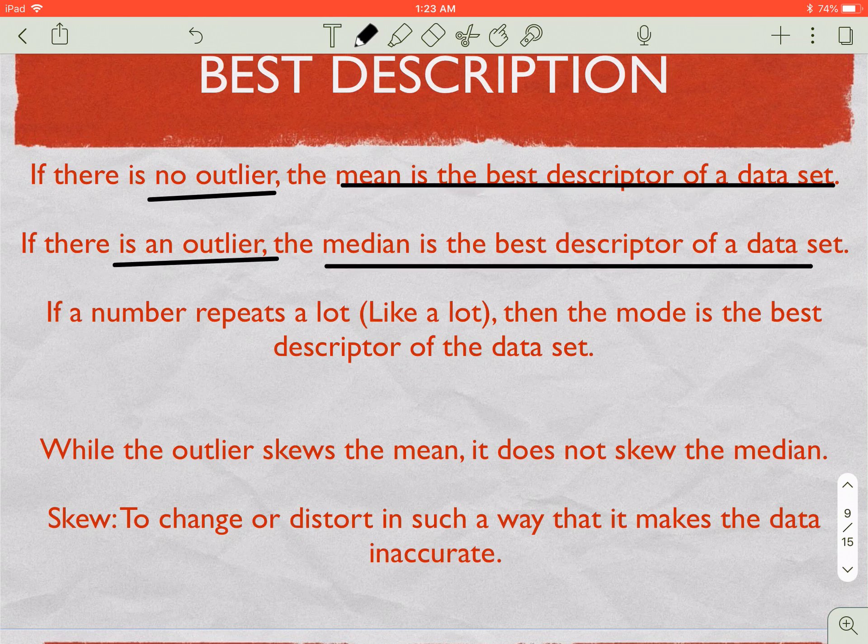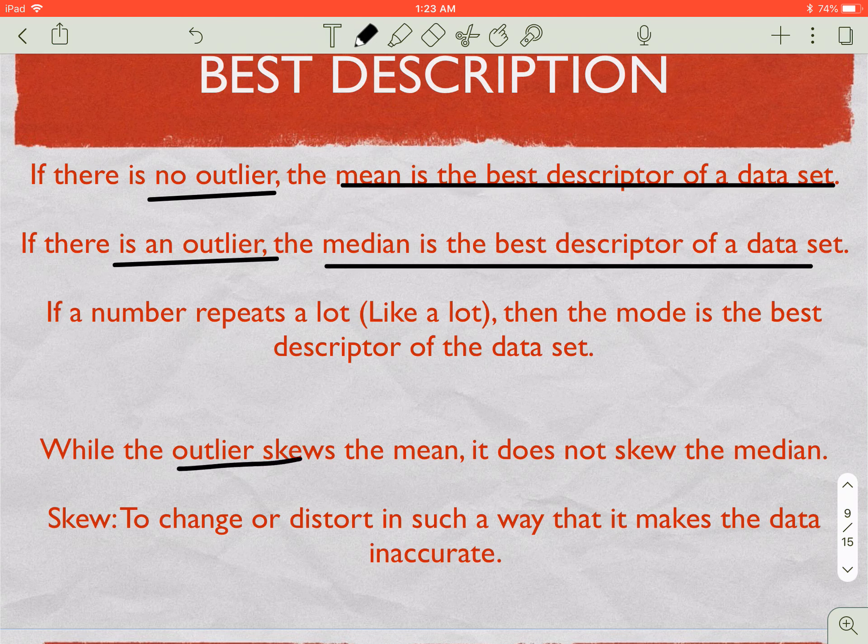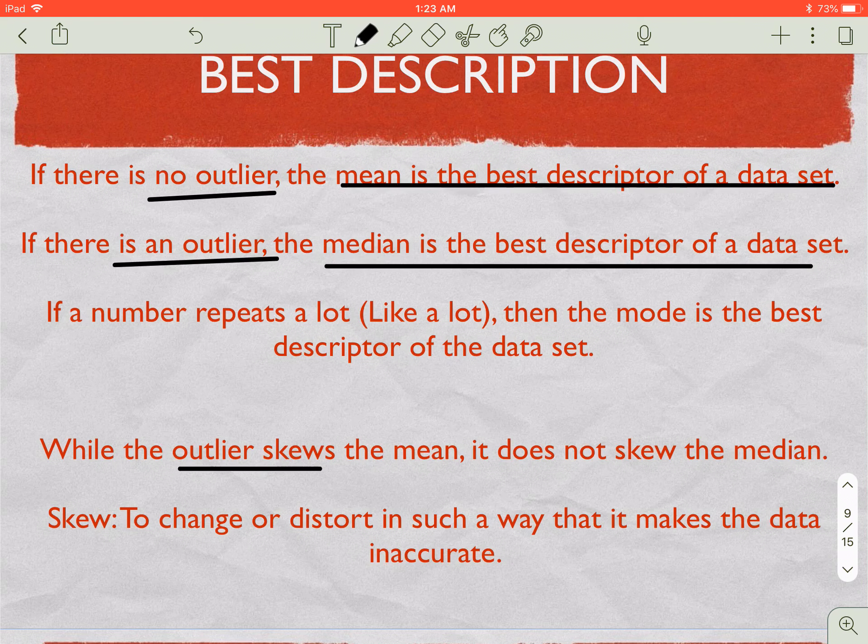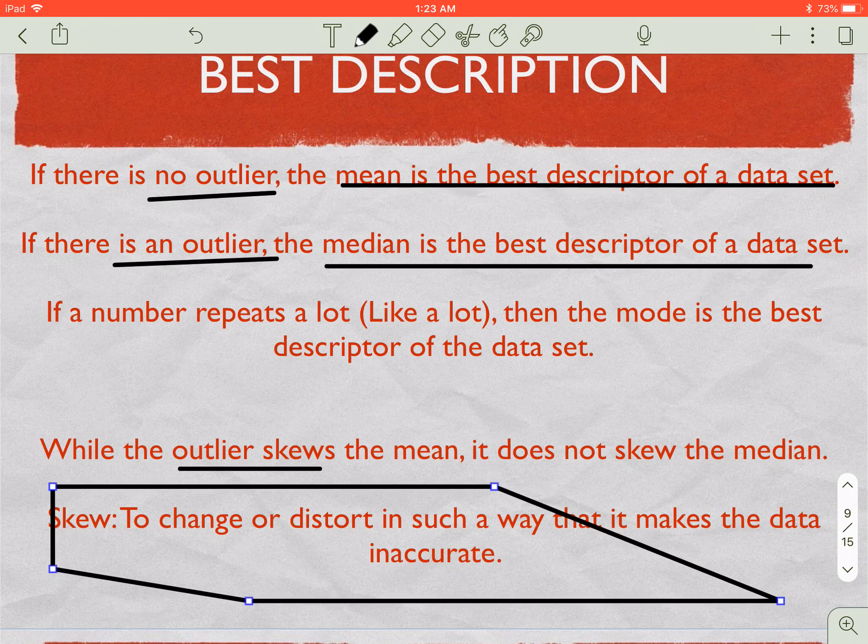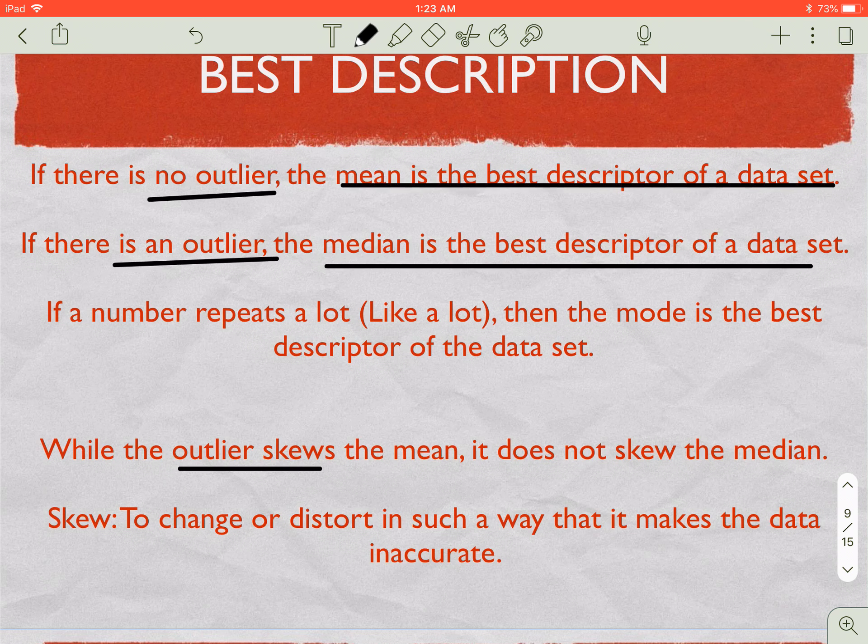Why is that so? Well, if we go down to the bottom, an outlier skews the data set. What does skew mean? Skew means to change or distort in such a way that it makes the data inaccurate. So an outlier makes our data inaccurate when we look at it. It just kind of messes it up a little bit. Skew, it screws it up, kind of sounds the same.